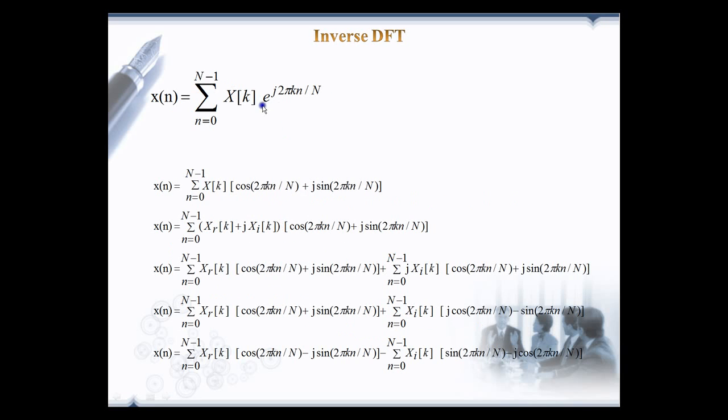We can expand e to the power j 2 pi k n divided by N using Euler's equation into rectangular form and it is given here: cos(2 pi k n / N) plus j sin(2 pi k n / N). X(k) is the complex variable so we can expand it with real and imaginary parts which is given in the next line.